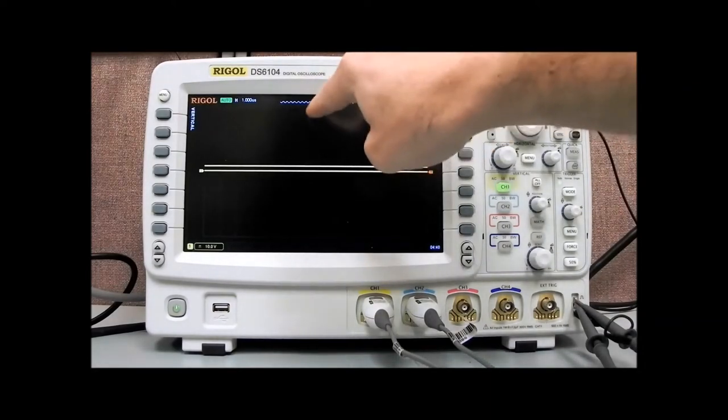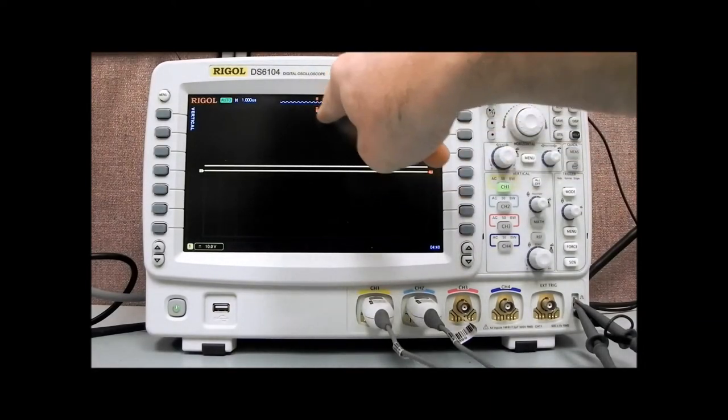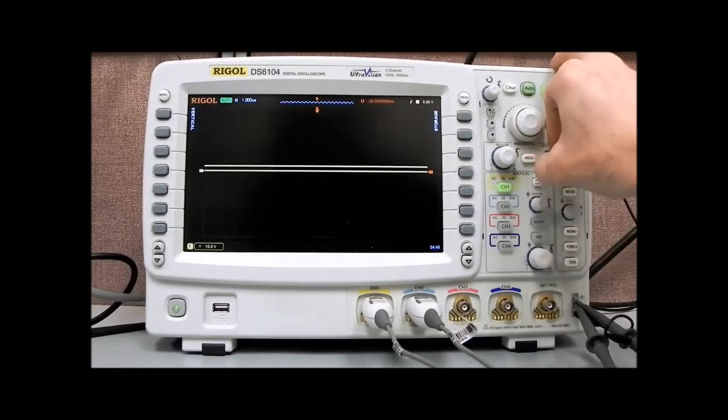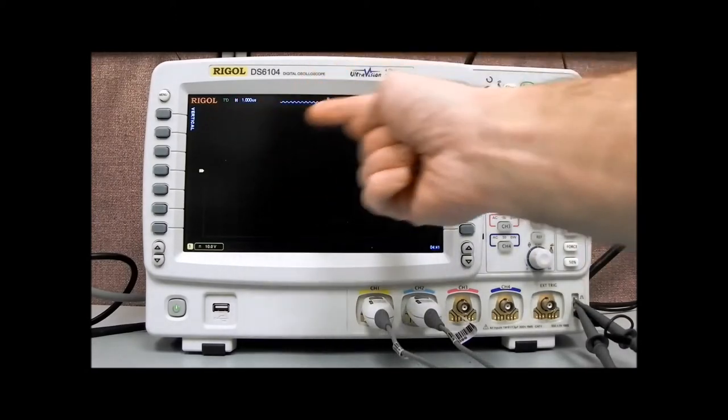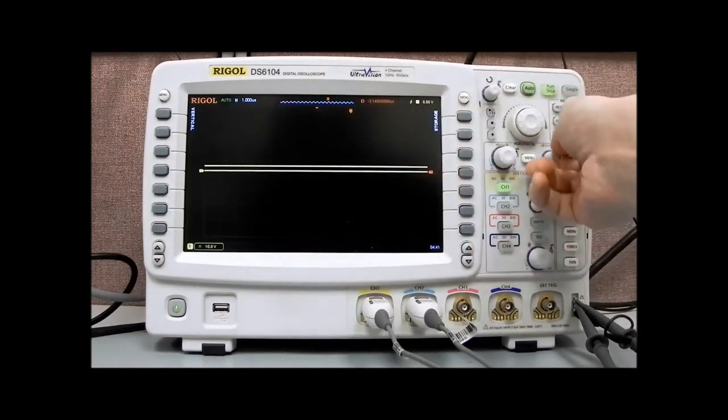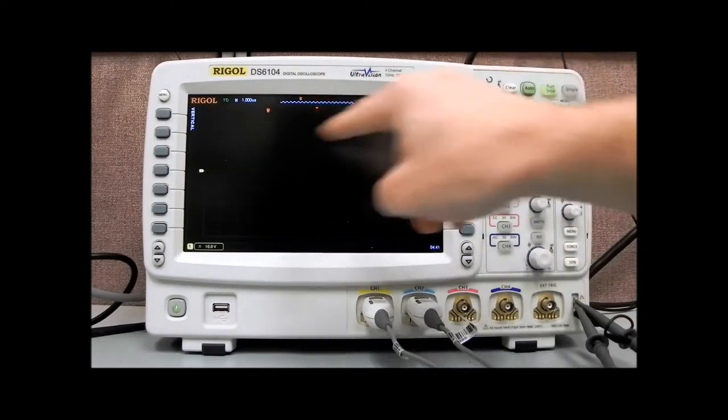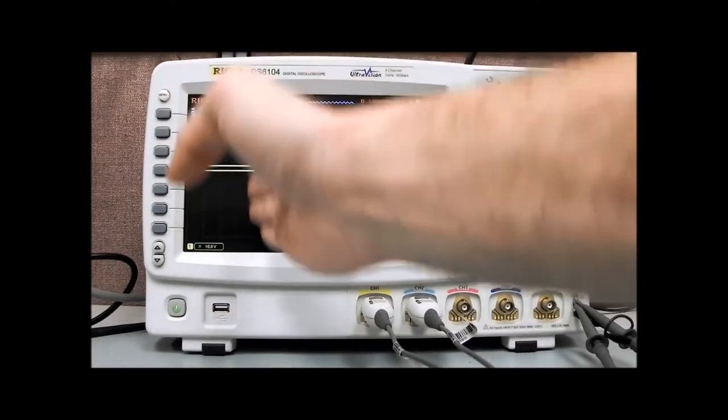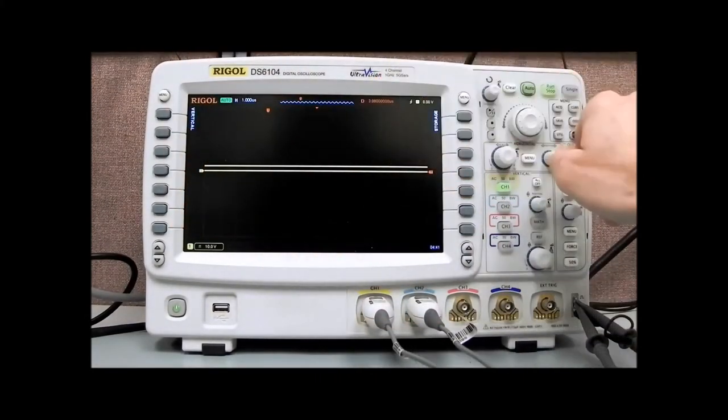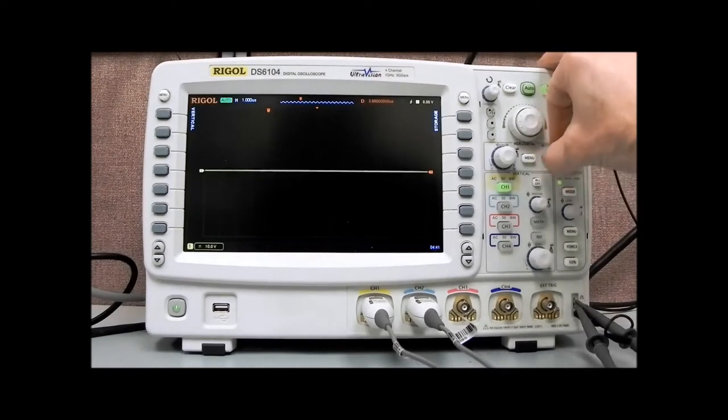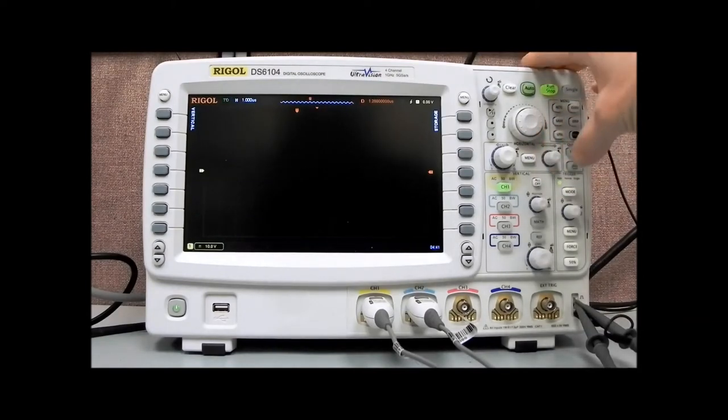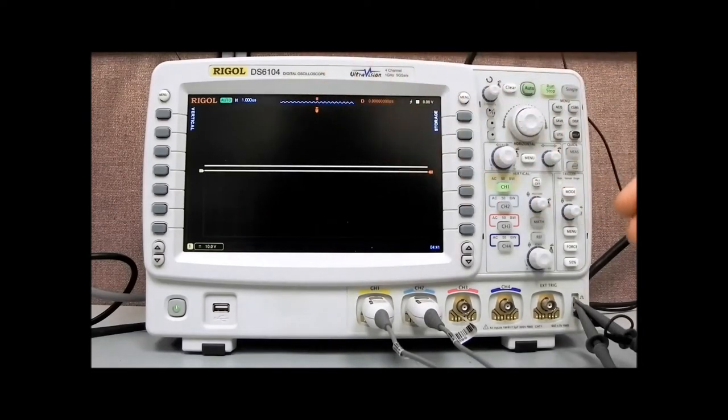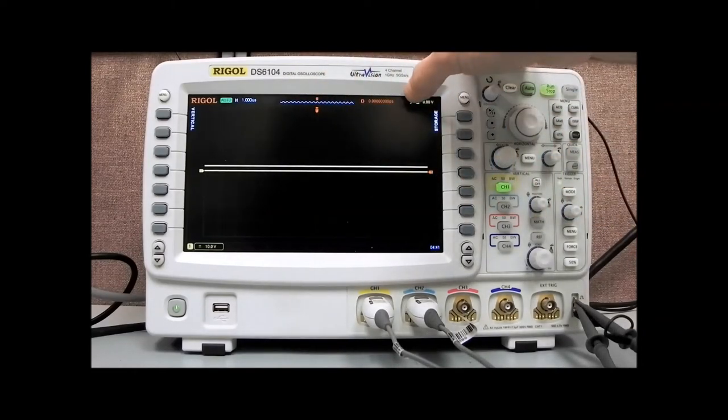The D denotes the distance in time from the trigger point to the actual center point of the display. As we go counterclockwise, we're going in negative time, the pre-trigger area, and if we go the other way, we're going to post-trigger time. These are events that have happened after the trigger. We'll see we have a positive time-based offset. To get back to center, you can press the small position knob, and it will bring it back to the center point.